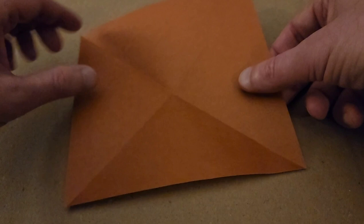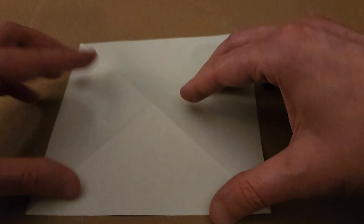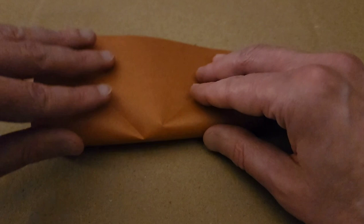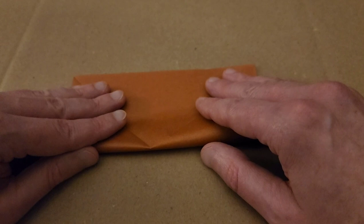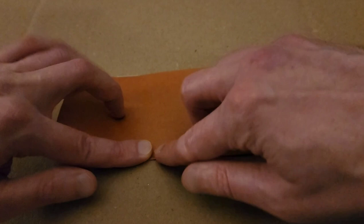Turn, and then fold the other way to make a triangle once again. There we go. Open it up, and turn your piece over, and then fold in half to make a rectangle both ways.